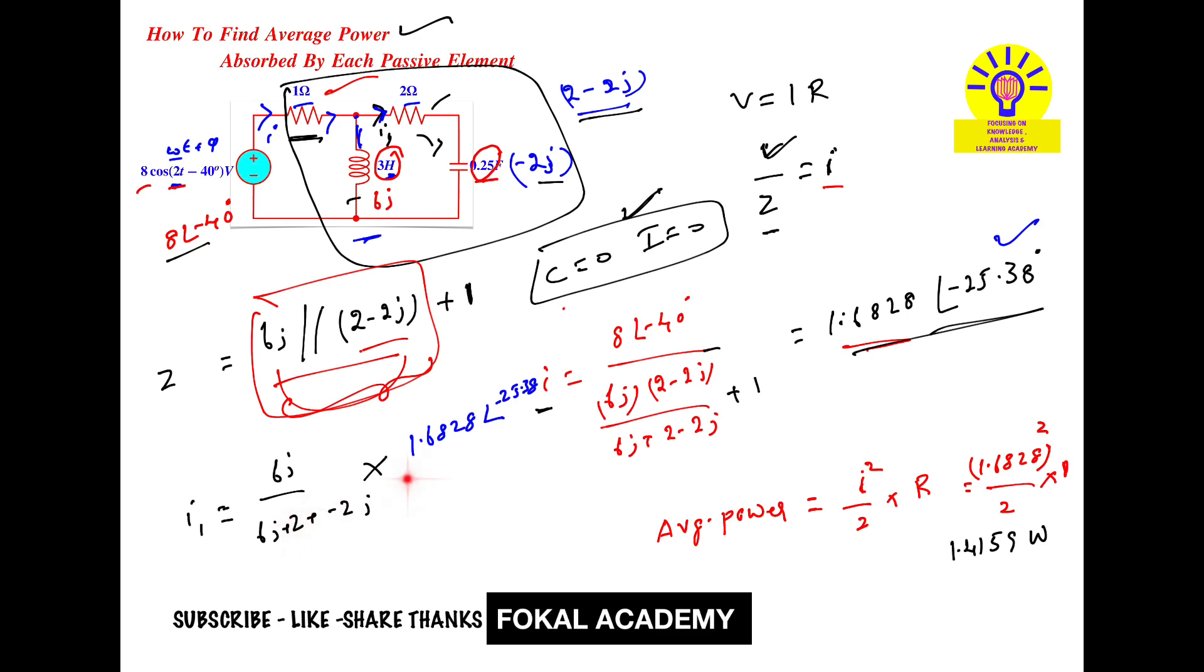This is in complete complex number form. Taking the magnitude, we get |I1| = 2.258. This is the current passing through the 2 ohm resistor. With this value, we can now apply the power formula.